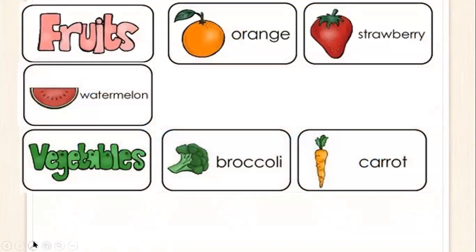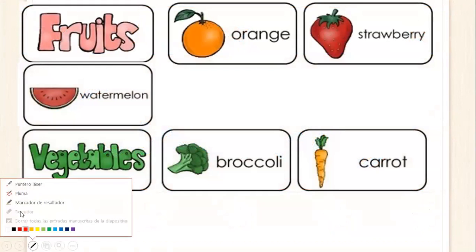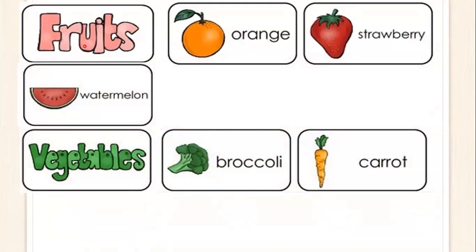Repeat after me each word. We have the next fruits. Repeat the word fruits like orange, strawberry, watermelon. Now we see fruits. Aquí vemos solamente fruits.